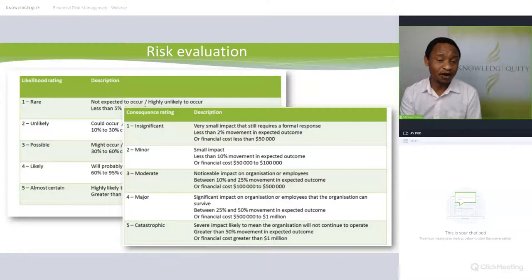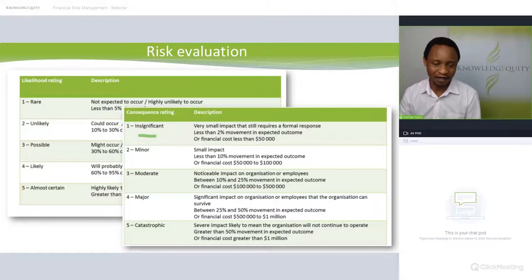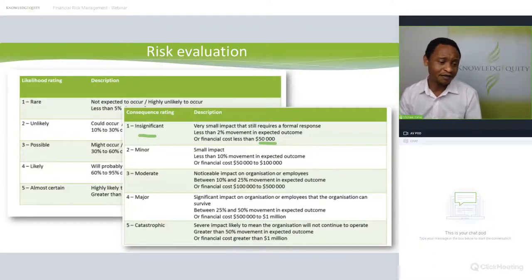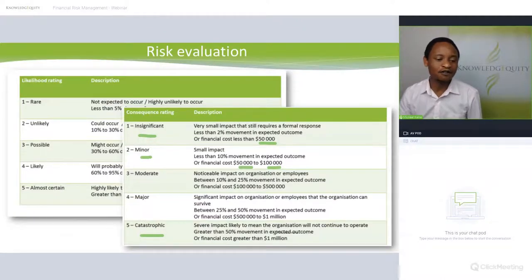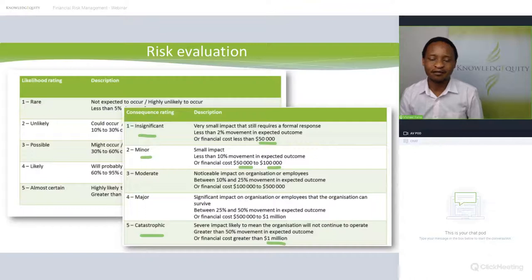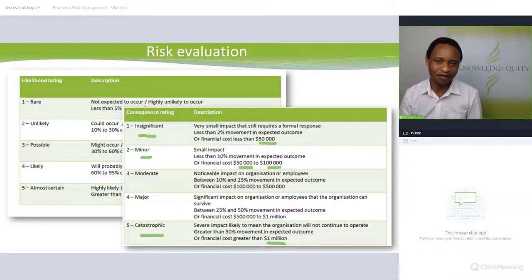The consequence table defines the impact in dollar terms. For example, in a small or medium-sized organization, a consequence might be 'insignificant' if the impact is less than $50,000. A minor consequence is between $50,000 and $100,000, and 'catastrophic' — meaning it could cause the organization to collapse — is any loss over one million Australian dollars. Remember, this consequence table fits that organization but would not be ideal for a company like Rio Tinto, where a million dollars has very little consequence.